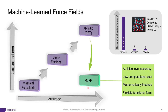As an example, a 96-atom hafnia system took about three and a half hours to complete 50 molecular dynamics steps using density functional theory. The machine-learned force field, which is the MTP here, took only 10 seconds, which is comparable to the time taken by a classical force field.